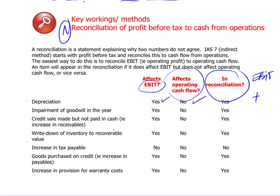What happens to impairment of goodwill in the year? You would expect that to be in the Consolidated Earnings Before Interest and Tax, but it does not affect cash flow — impairment is an accounting measure. So it was a minus in EBIT; now it comes back with a plus. Similarly, a credit sale made but not paid in cash yet is recorded in EBIT, but because it's a credit sale it doesn't affect cash flow. Therefore you have to make an adjustment — it was included in EBIT, so now you take it out with a minus.